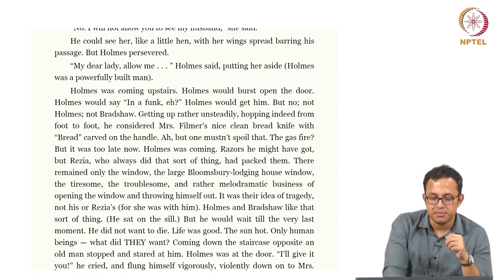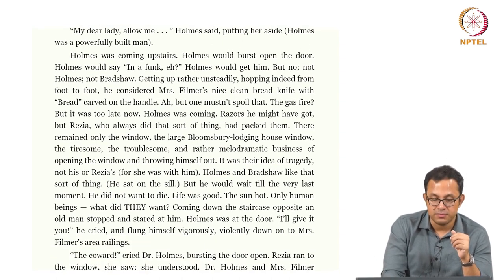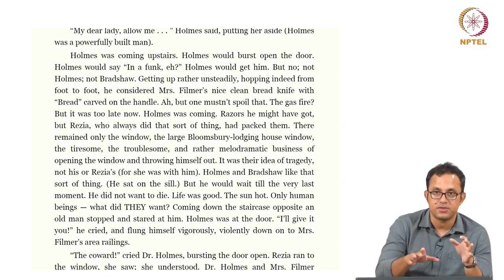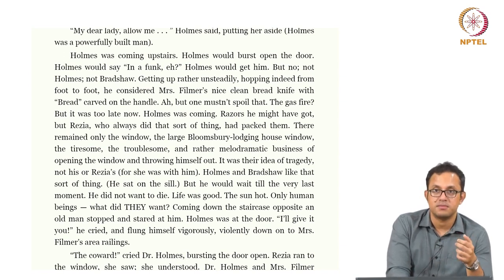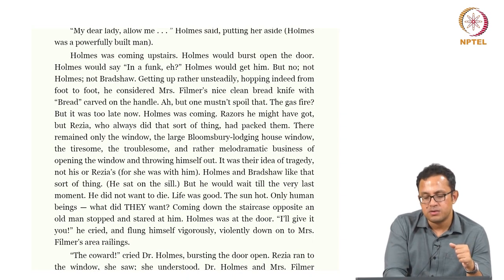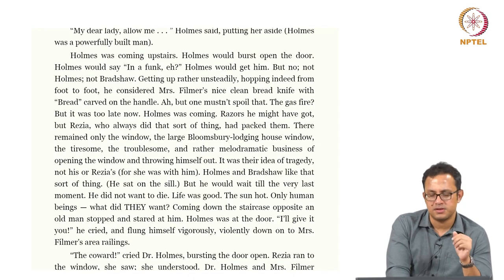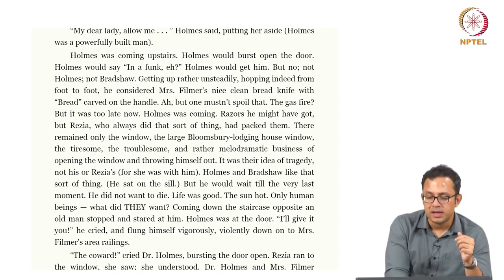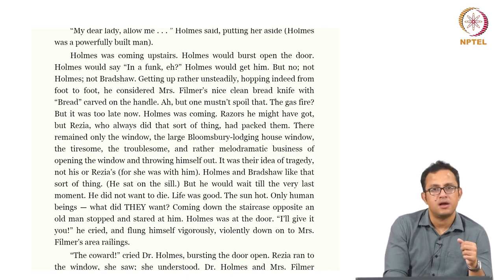Coming down the staircase opposite, an old man stopped and stared at him. 'I will give it to you!' he cried and flung himself vigorously, violently down onto Mrs. Filmer's area railings. The entire suicide is not a submission but an act of violent retaliation — the only retaliation possible in this situation. Suicide here is not the loss of agency but the final agency available to Septimus; he kills himself thinking it is the only thing available to him at this point.